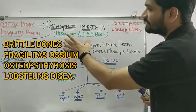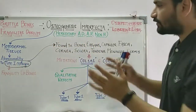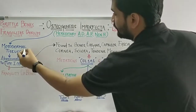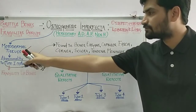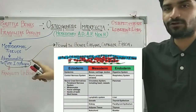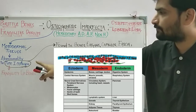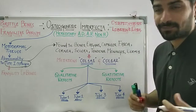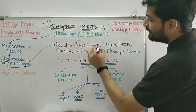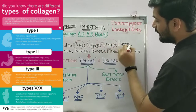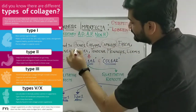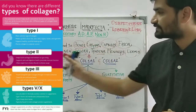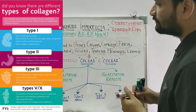As mentioned, whether hereditary or non-hereditary, there will be a defect in the mesodermal tissues — specifically an abnormality in the type 1 collagen of mesodermal tissues. Type 1 collagen is found in various parts of the body: mainly bones, then various organ capsules, fascia, corneas, sclera, tendons, meninges, and dermis.